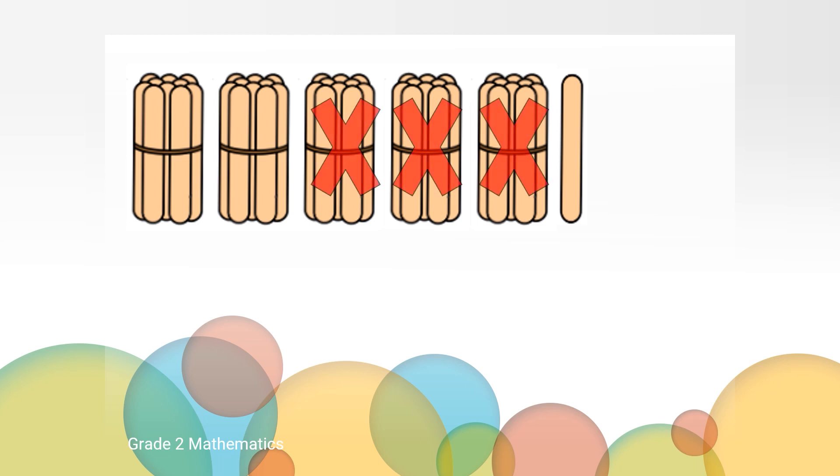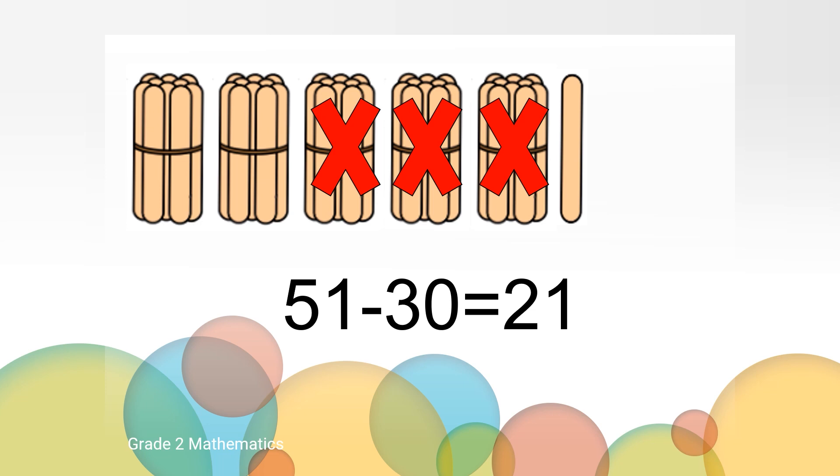I see 51. If I were to take away three bundles, how many would we have? We'd have 21. How did you think about it? Maybe you counted backwards by tens: 51, 41, 31, 21, or maybe you knew five tens minus three tens is two tens or 20. There was already one stick with a value of one, so the value in the ones place didn't change. What equation could we write to match what we just did?